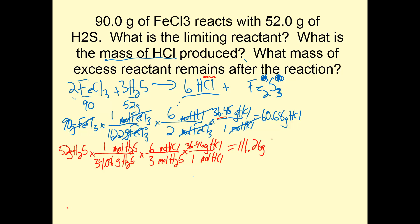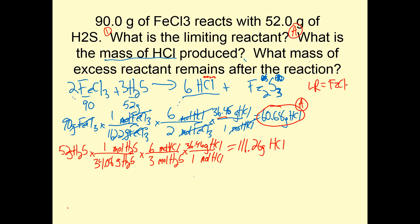I have a smaller amount from FeCl3. So 60.68 grams is the actual amount of HCl made — that's the answer. The limiting reactant is FeCl3, because it produced the least amount. My excess reactant is H2S, because it made the most.